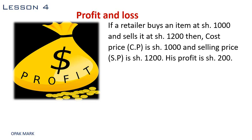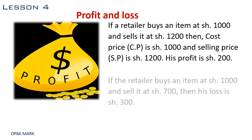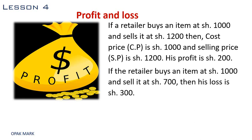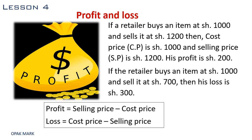If the trader or the retailer buys an item at 1000 shillings and sells it at 700 shillings, then he would have made a loss and his loss will be 300 shillings. We have a formula for profit: profit is equal to the selling price minus the cost price. And loss is the cost price minus the selling price.